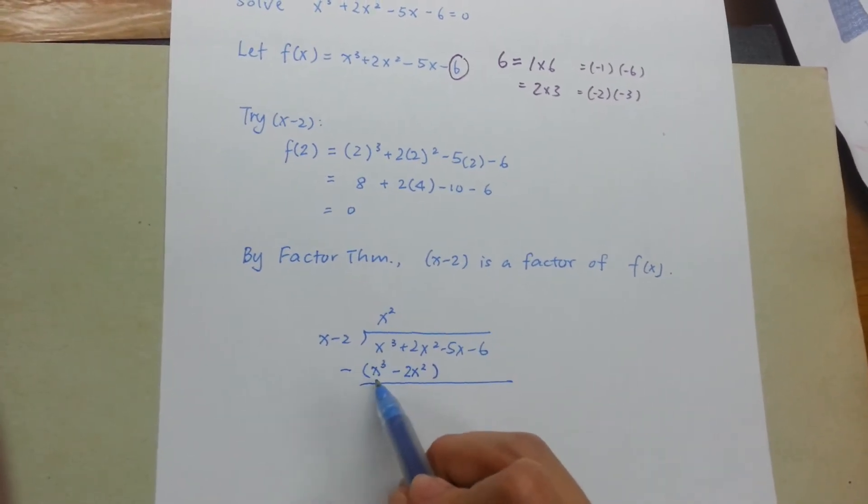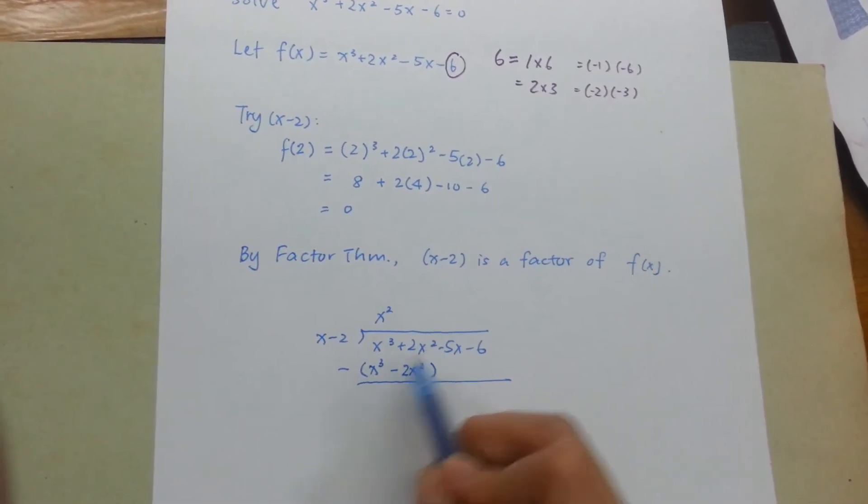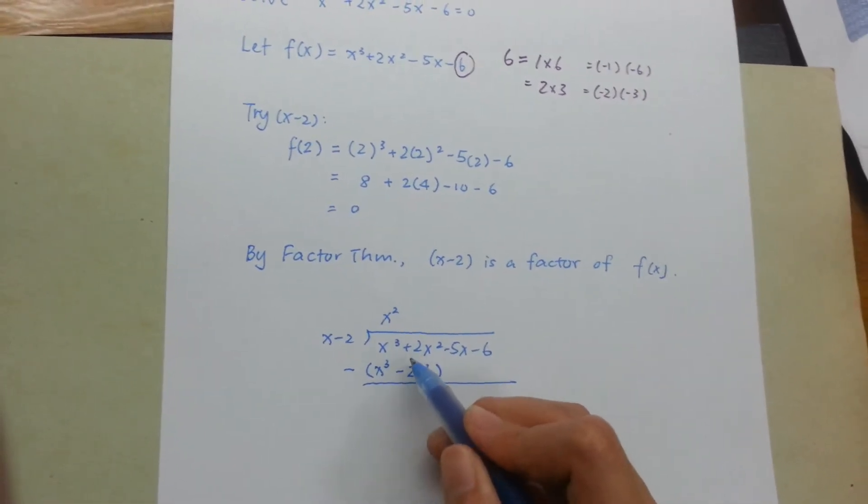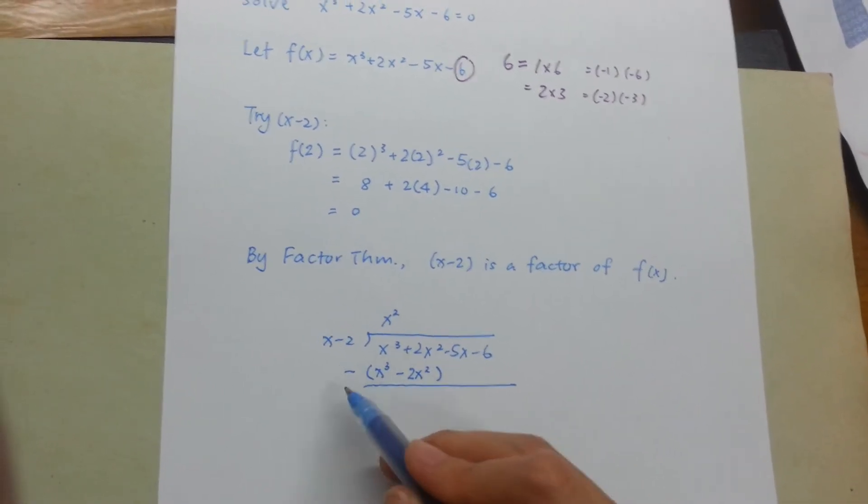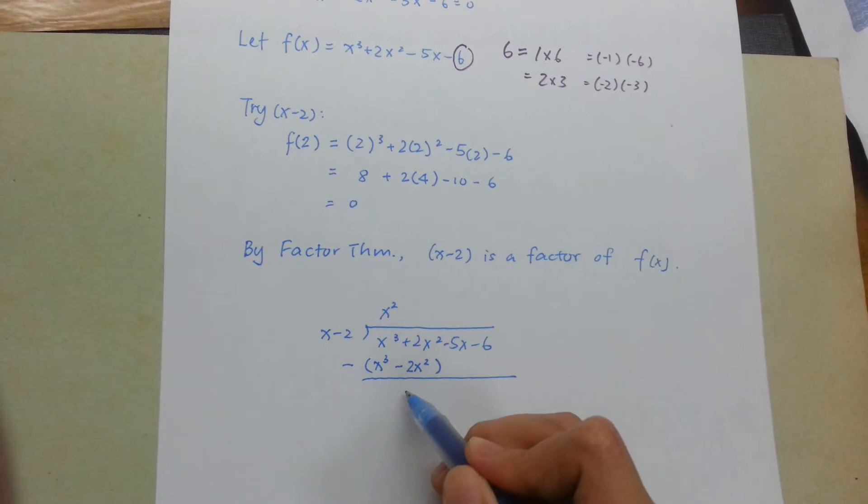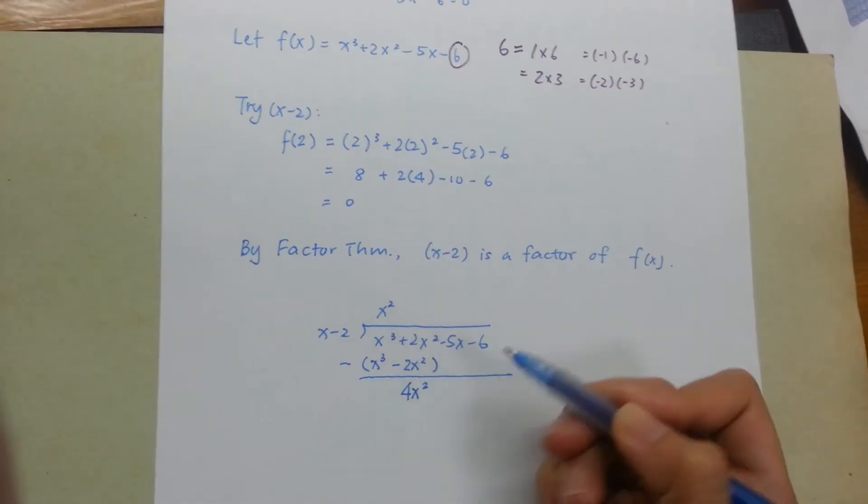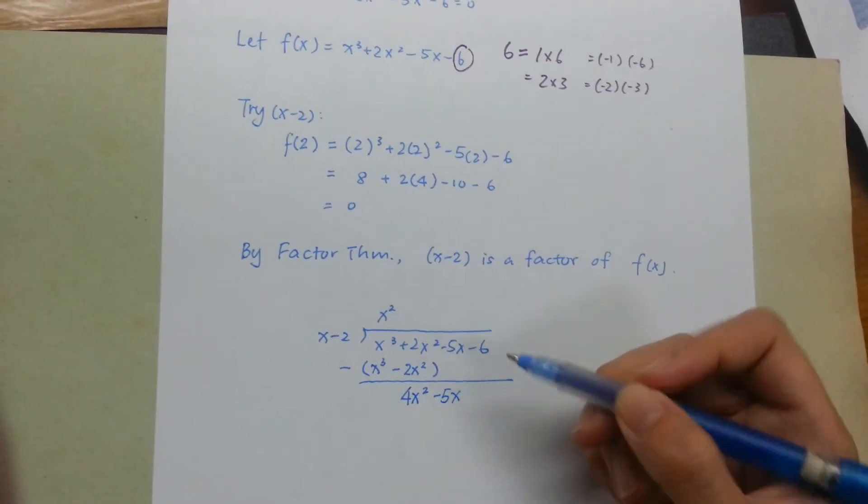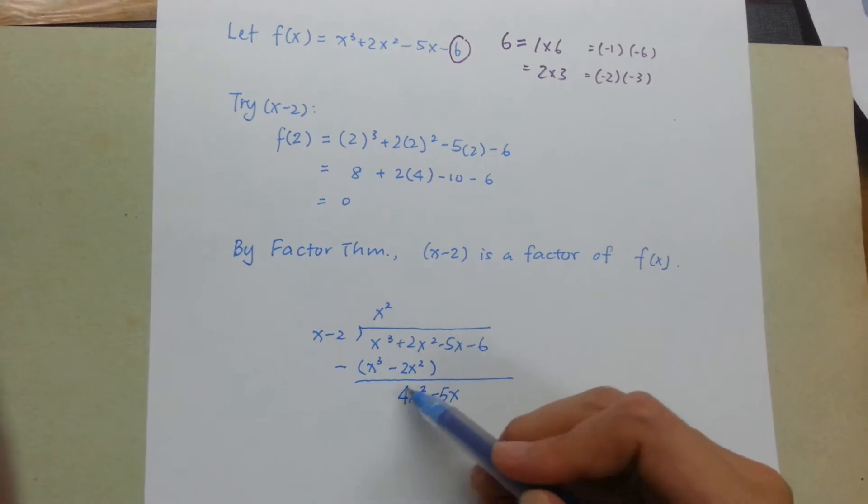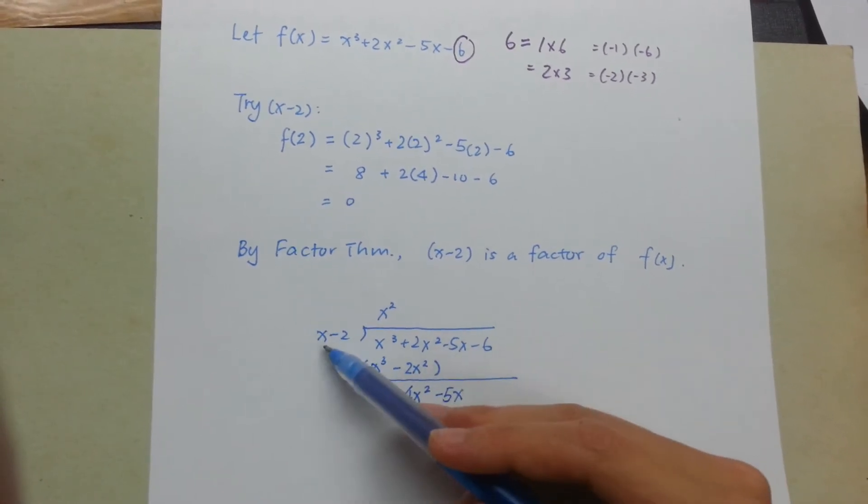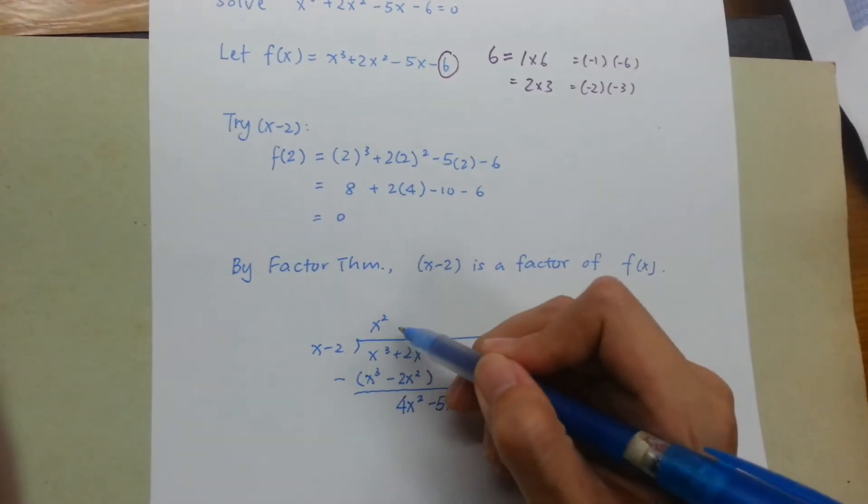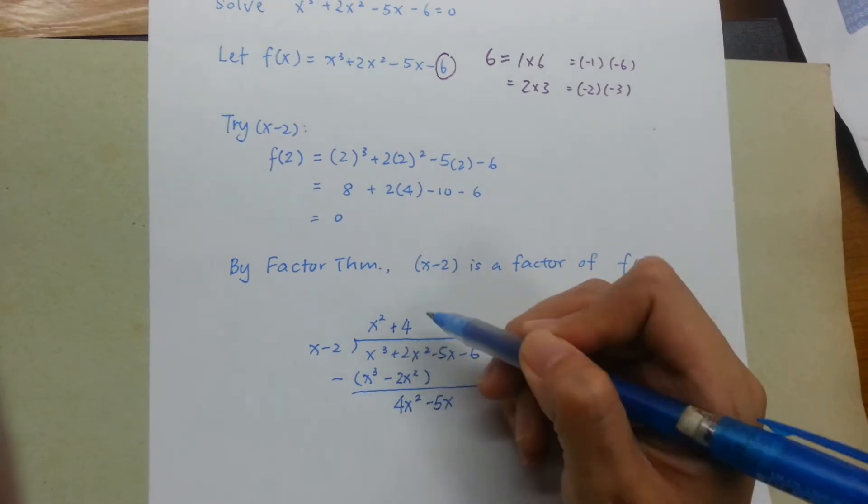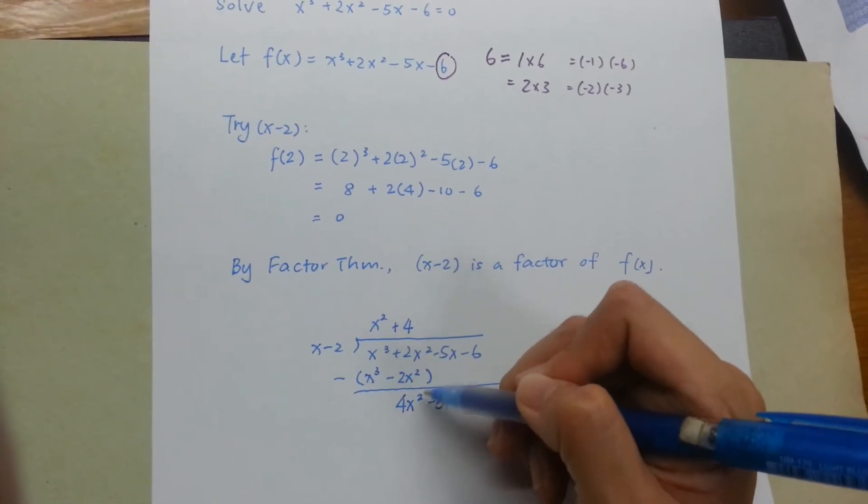I close my bracket and subtract this from what's above. So x³ minus x³ is nothing. 2x² minus negative 2x² will give me 2x² plus 2x², because negative times negative is positive. So I will end up with 4x².